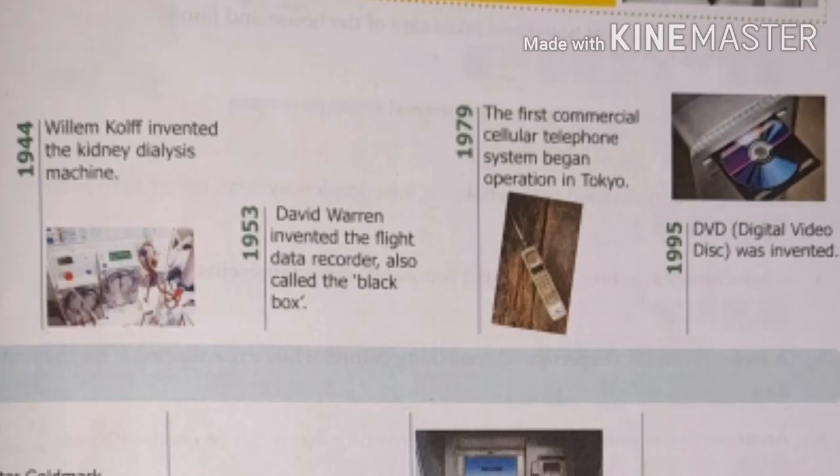Wilhelm Kolff invented the kidney dialysis machine. Wilhelm Kolff ne kidney dialysis machine — kidney ka jo dialysis hota hai — usse invent kiya tha. Dialysis machine 1934 mein invent hui thi.